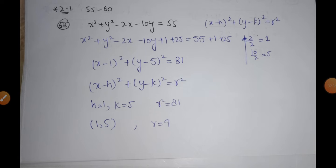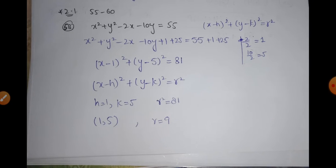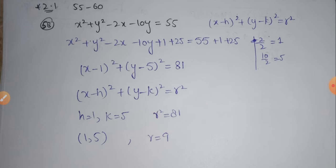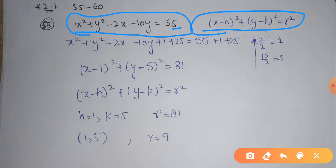Next, in questions 55 to 60, we do the opposite: we are given the equation of a circle and have to find the center and radius. The equation given is X squared plus Y squared minus 2X minus 10Y equals 55. Right now we cannot find the center or radius because the general form of the equation of a circle is (X minus H) whole square plus (Y minus K) whole square equals R squared. If we can put the equation in this form, we can find the center and radius by comparison.